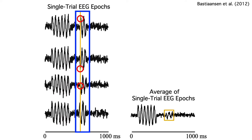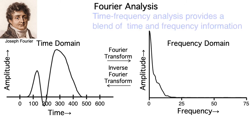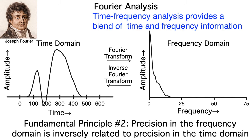Time-frequency analysis is a way of making these oscillations visible by estimating the amplitude independent of the phase. That's what Fourier analysis does — it tells us the amplitude at each frequency independently of the phase. However, standard Fourier analysis completely gets rid of time. Time-frequency analysis gives us a blend of time and frequency information. Remember that precision in the time domain is inversely related to precision in the frequency domain.